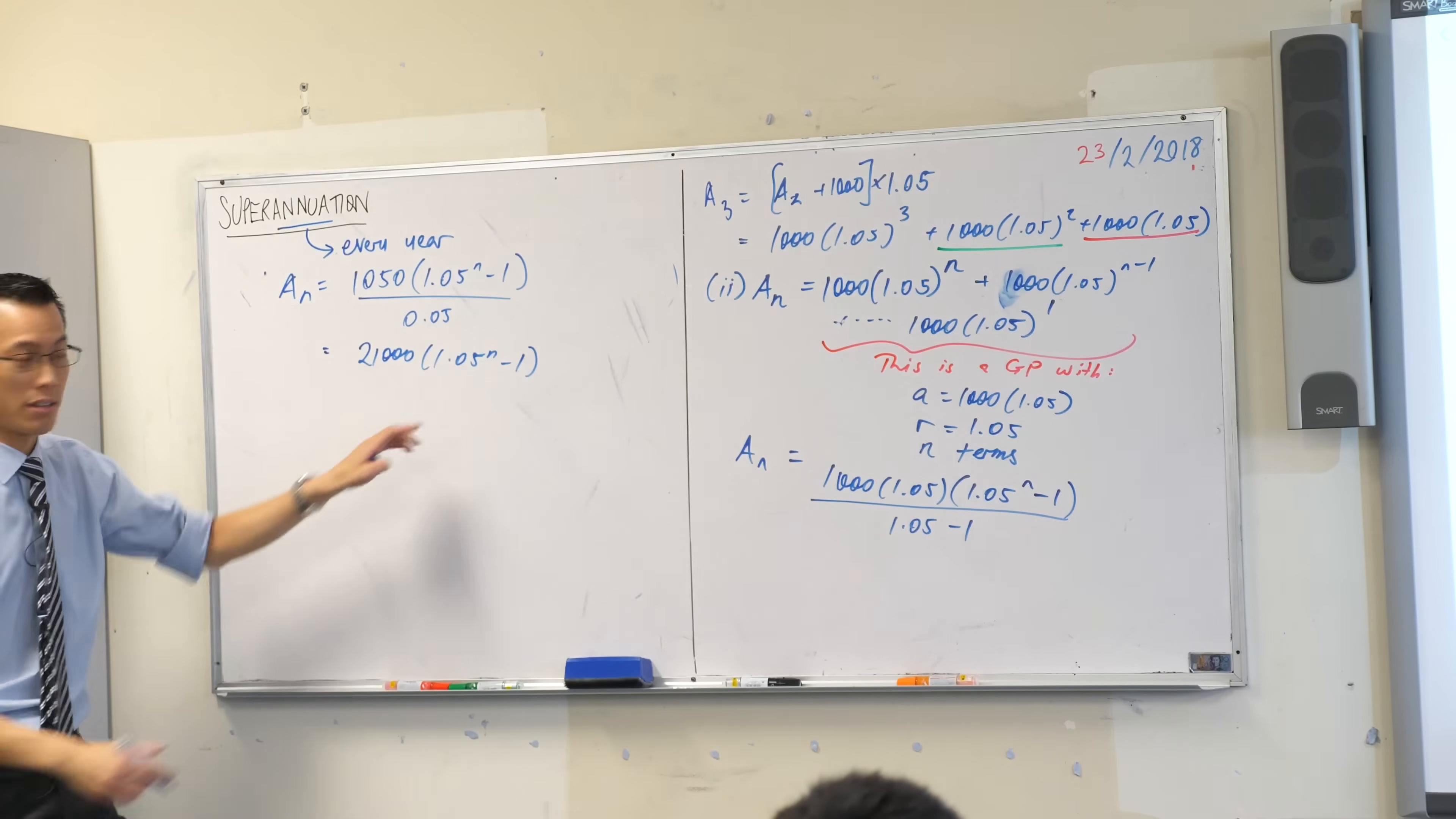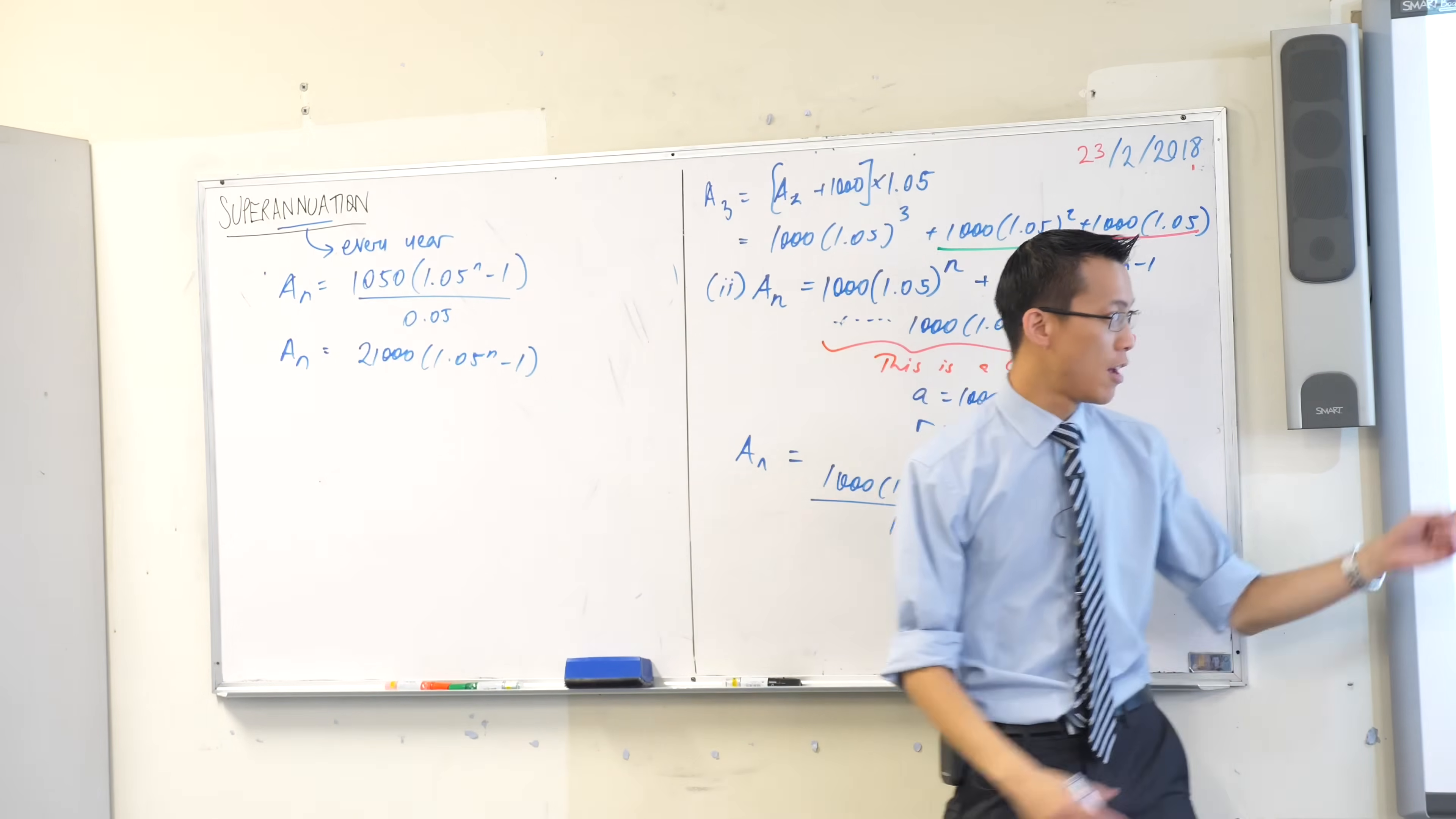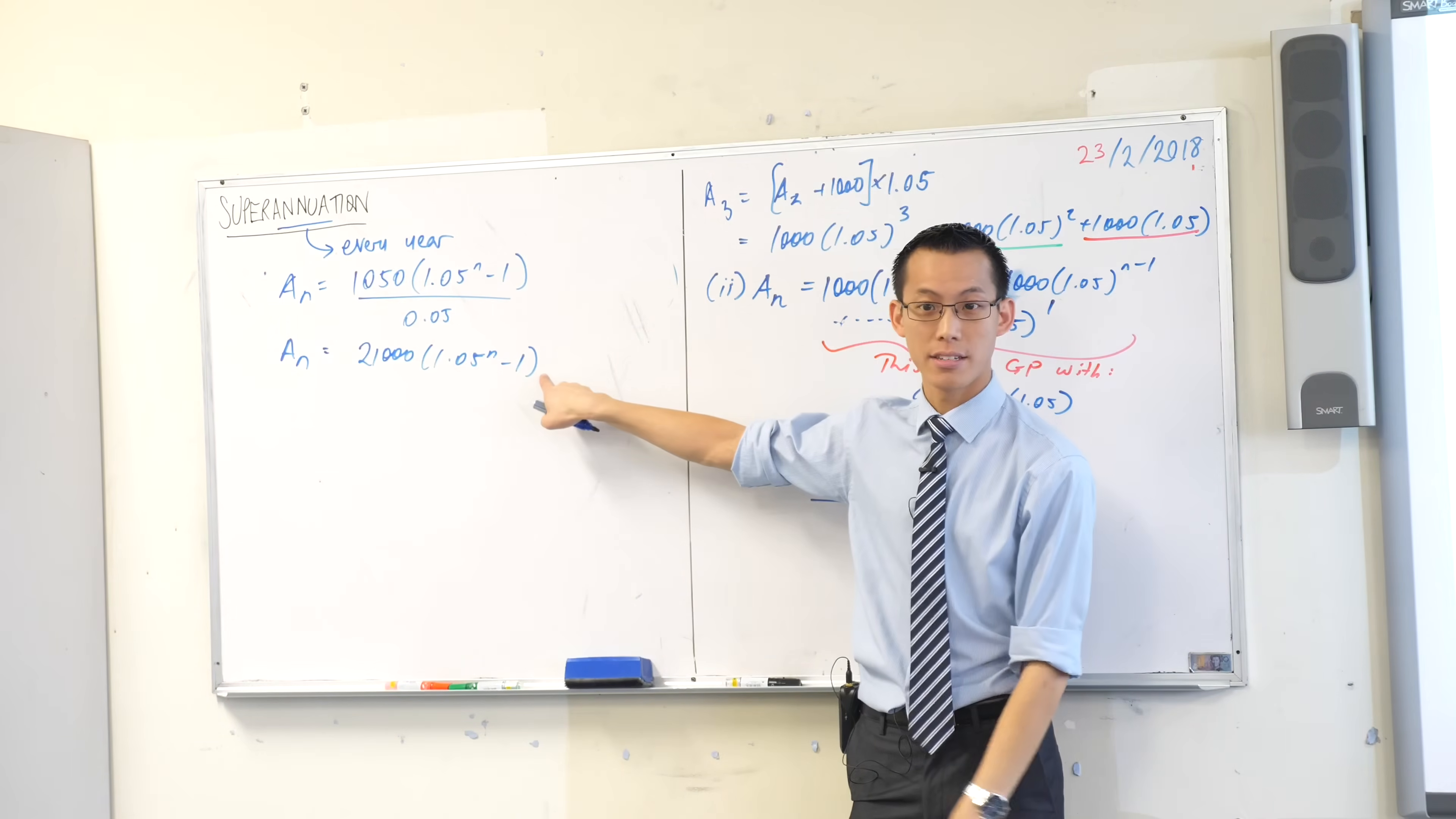There you go. There's my expression for a of m. Is that okay? And again, the question might have said instead, prove that the expression for the amount in Mr. Wu's count at the end of n years is that.